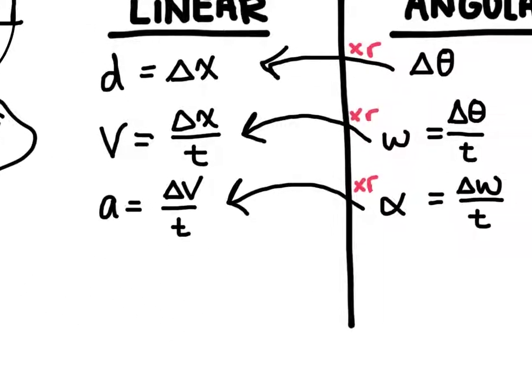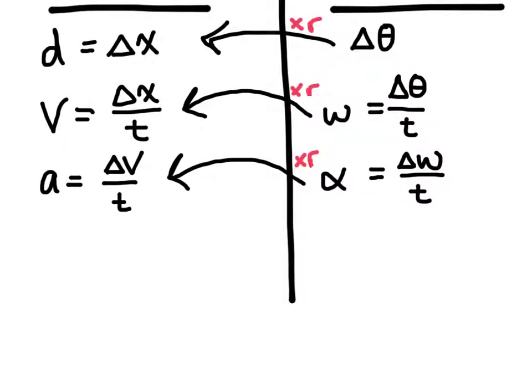Okay, so let's summarize these conversions here. When you want to convert from angular position, if you want to know delta x, it's going to be equal to delta theta times the radius.